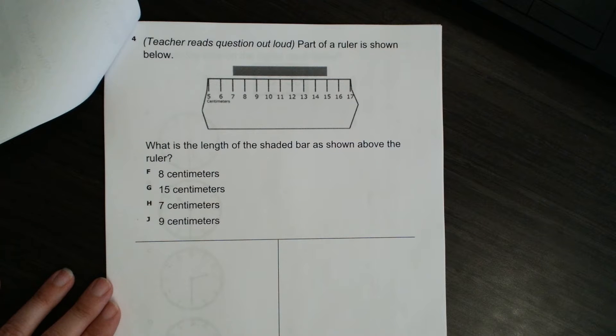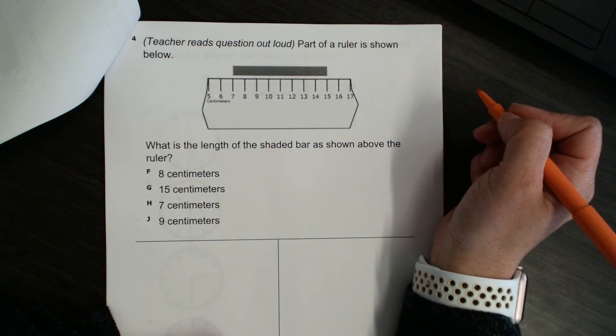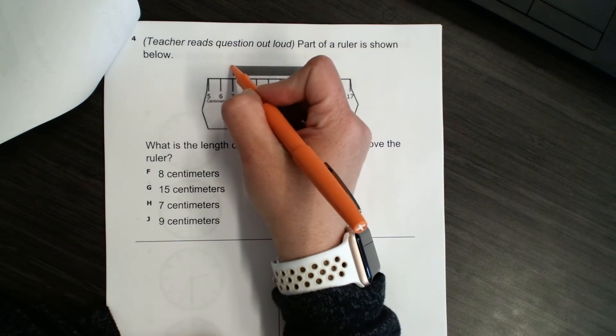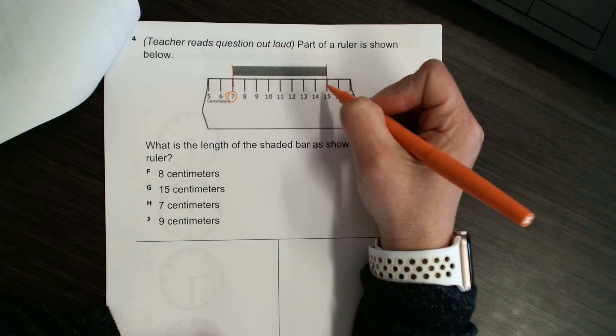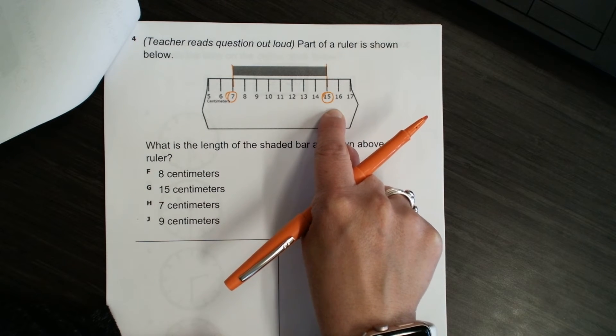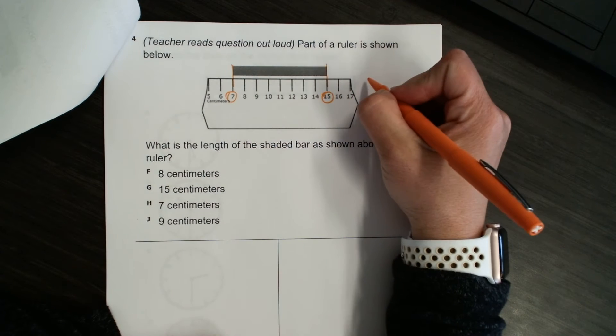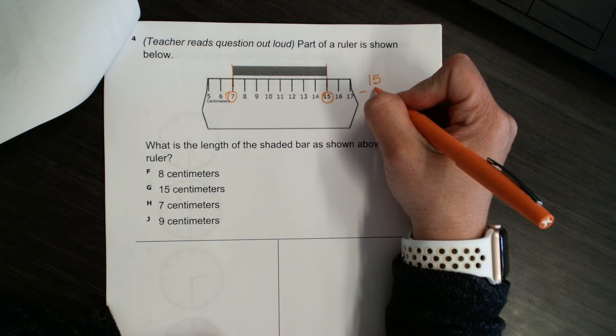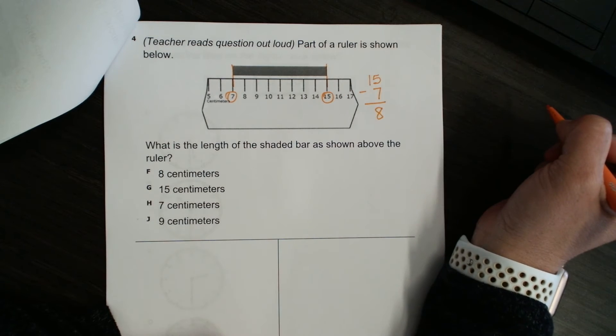Number four. Part of a ruler is shown below. What is the length of the shaded bar as shown above the ruler? Okay, so let's just look before we look at our answers and let's figure this out. So, our shaded bar starts at 7, and it ends at 15. Now, remember we practiced this. We can think of our ruler like a number line, and we can say how many spaces are between 15 and 7. So, I'm going to subtract 15 minus 7, and I know that is 8, but let's double check with our hops.